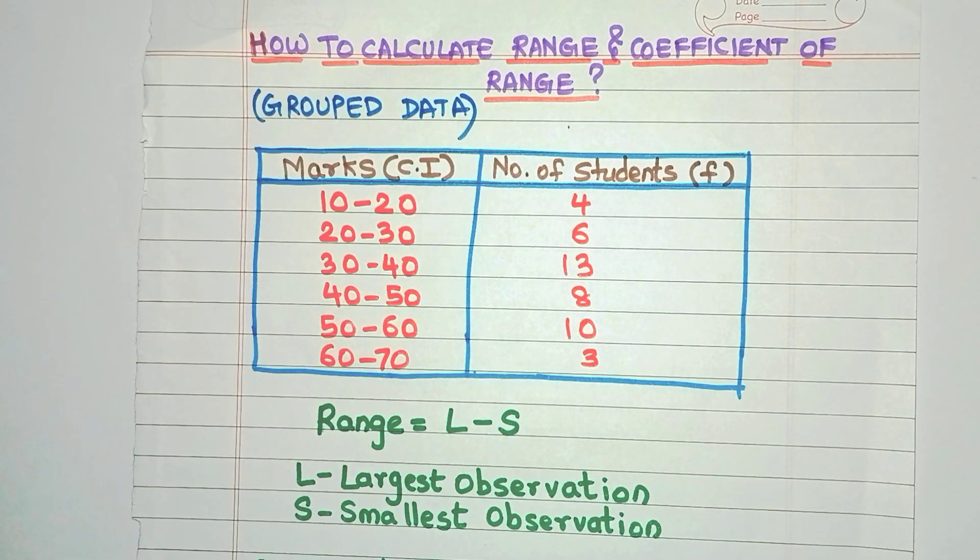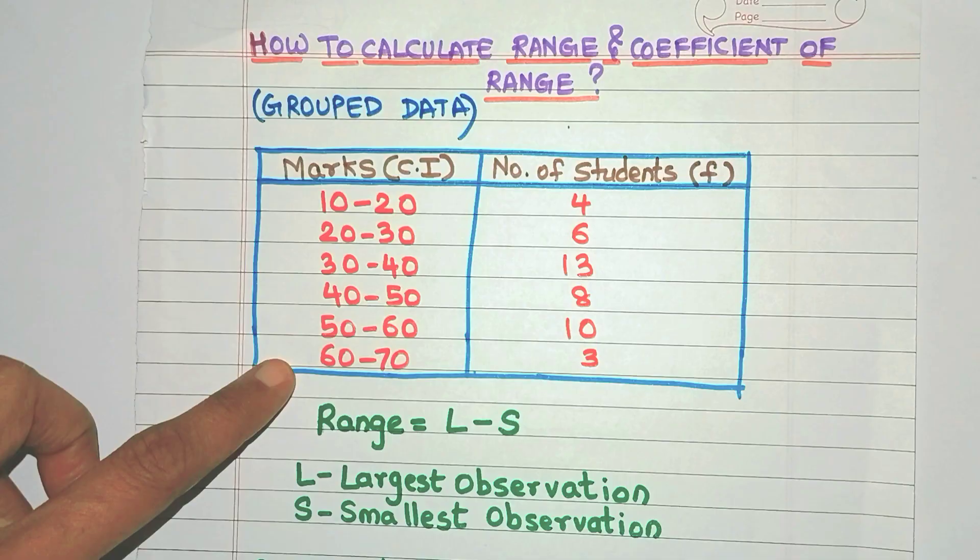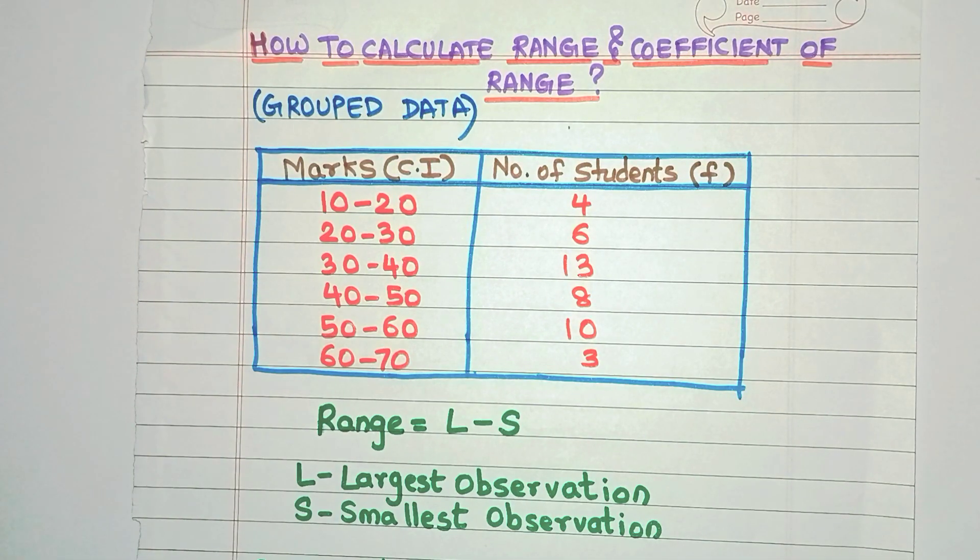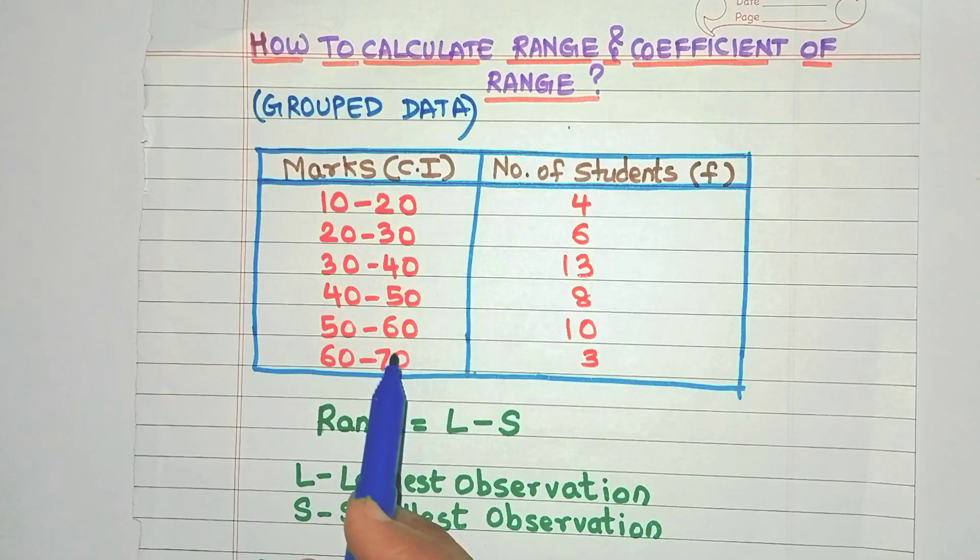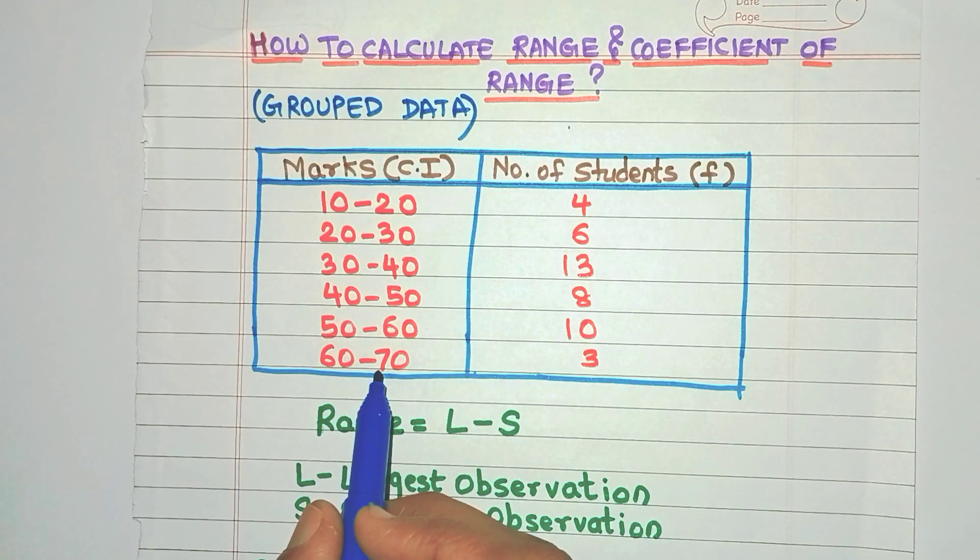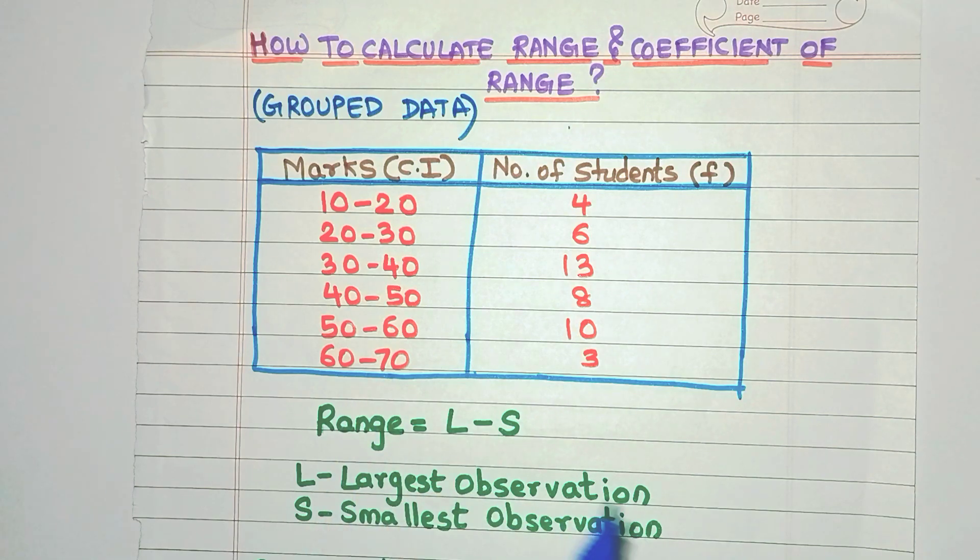Well, firstly, let's ensure that all the class intervals are arranged in ascending order like this. Then what we need to do is just take the last class interval, that is here at 60 to 70. So what is the upper limit? Yes, it is 70.